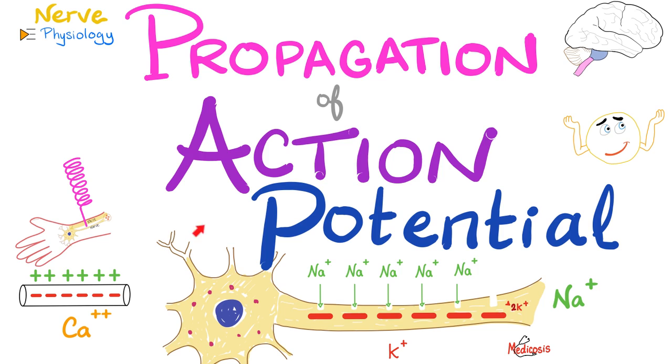Hey guys, it's Medicosis Perfectionalis, where medicine makes perfect sense. This is video number 49 in my physiology playlist. In this playlist, from video number 1 through 25, we talked about introduction, the cell membrane, transport, diffusion, osmosis, etc. From 25 to 40, we talked about the autonomic nervous system physiology. From 40 to 50, this is nerve physiology.